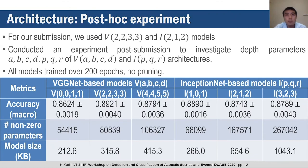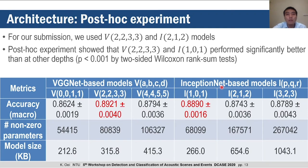Although we fixed the depth parameters for submission, we conducted an experiment after the challenge to investigate how they affected model performance. All models were trained over 200 epochs without pruning. The results show that model complexity quickly and significantly increases with increasing depth. However, the V2233 and I101 models performed significantly better, with mean macro-averaged accuracies of 0.8921 and 0.8890 respectively. In retrospect, our choice of I212 for our submission could have been suboptimal.